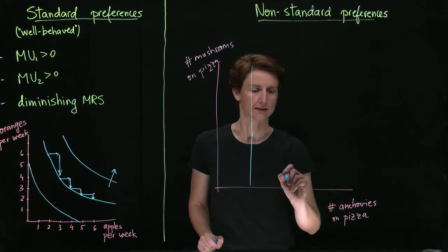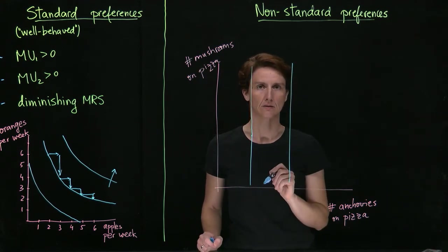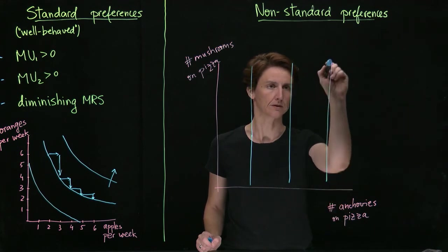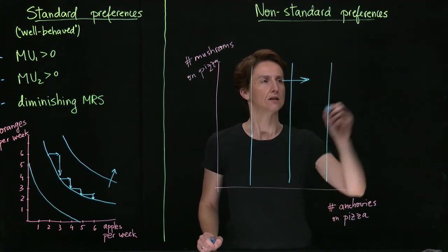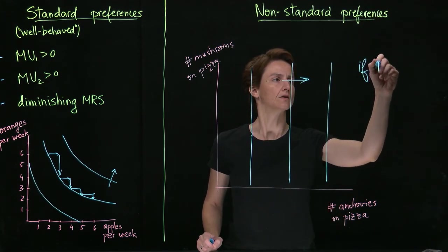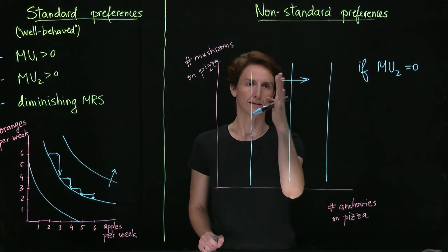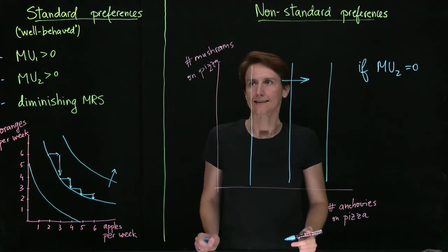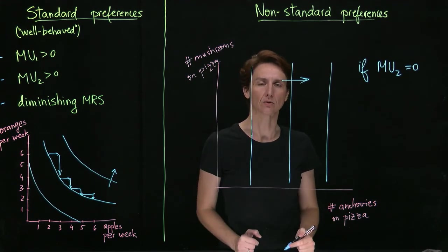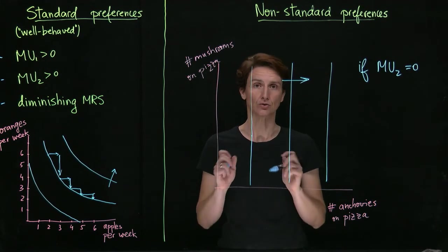If we have more anchovies, it doesn't matter how many mushrooms we have. We'll be equally happy and so on. So if MU2 is zero, we would have these types of vertical indifference curves, and we would say that that good with zero marginal utility is a neutral.